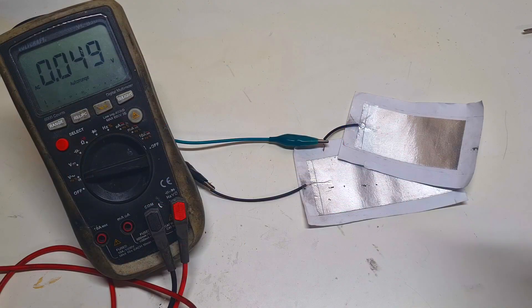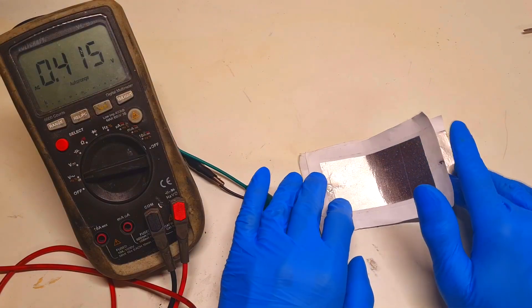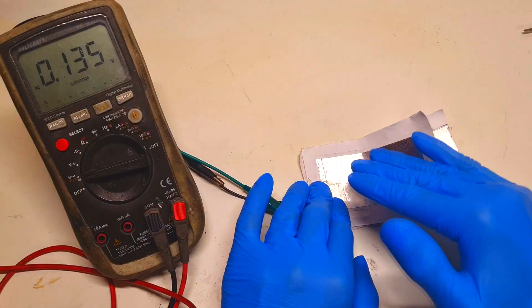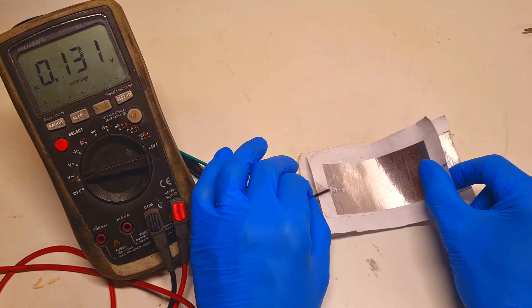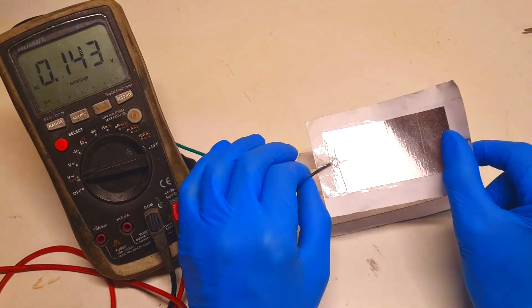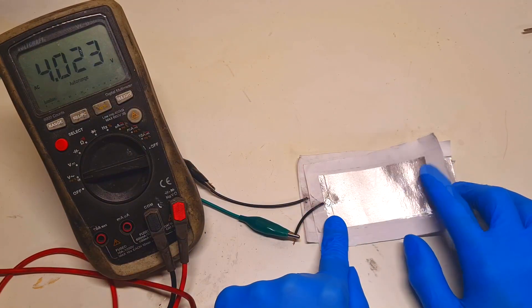Like this one, this operates in the vertical contact separation mode, which means that the top electrode will go up and down. So only by tapping I get up to 4 volts.